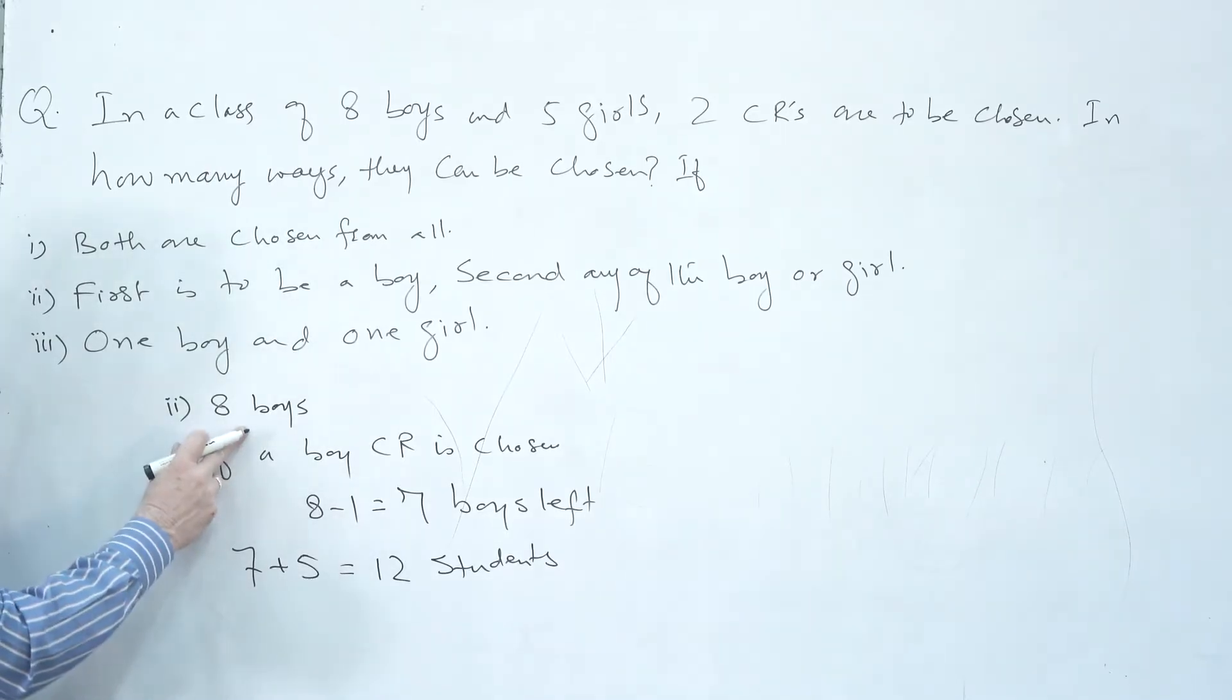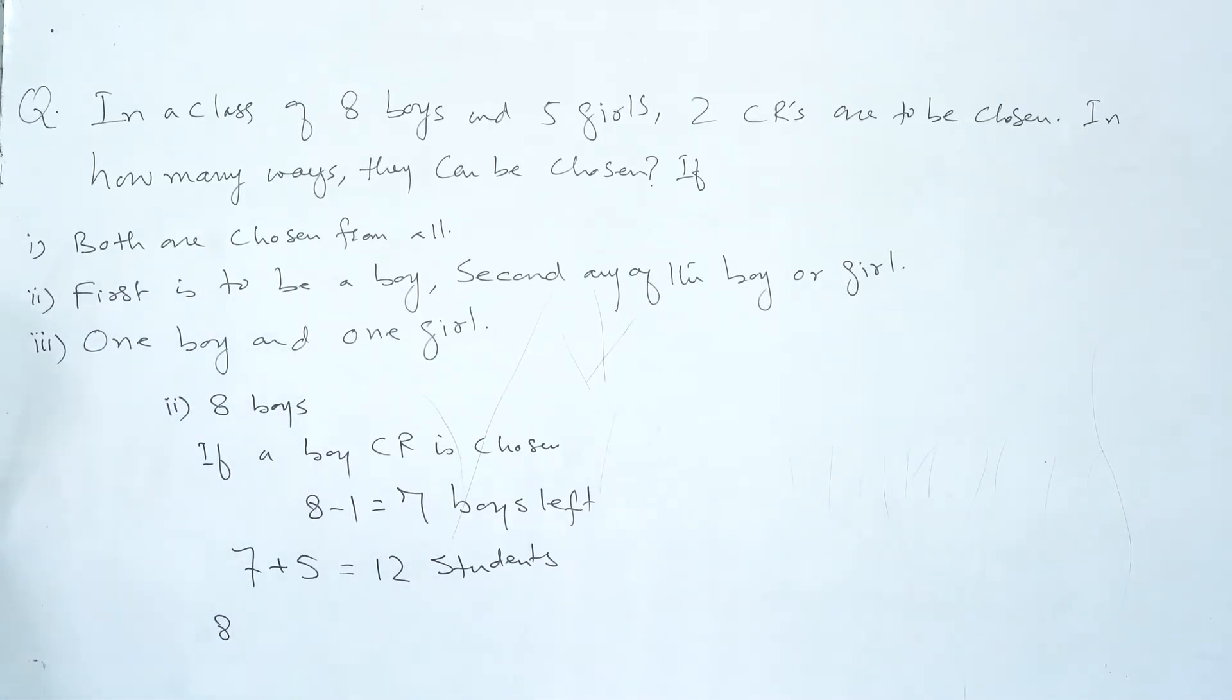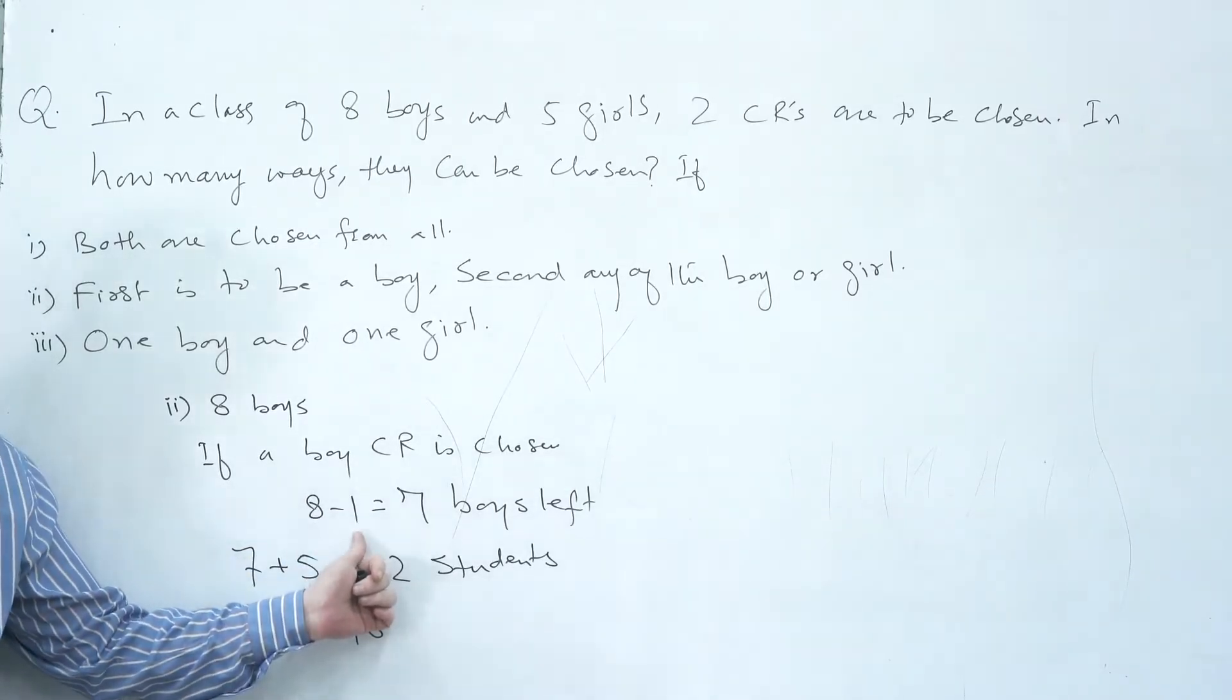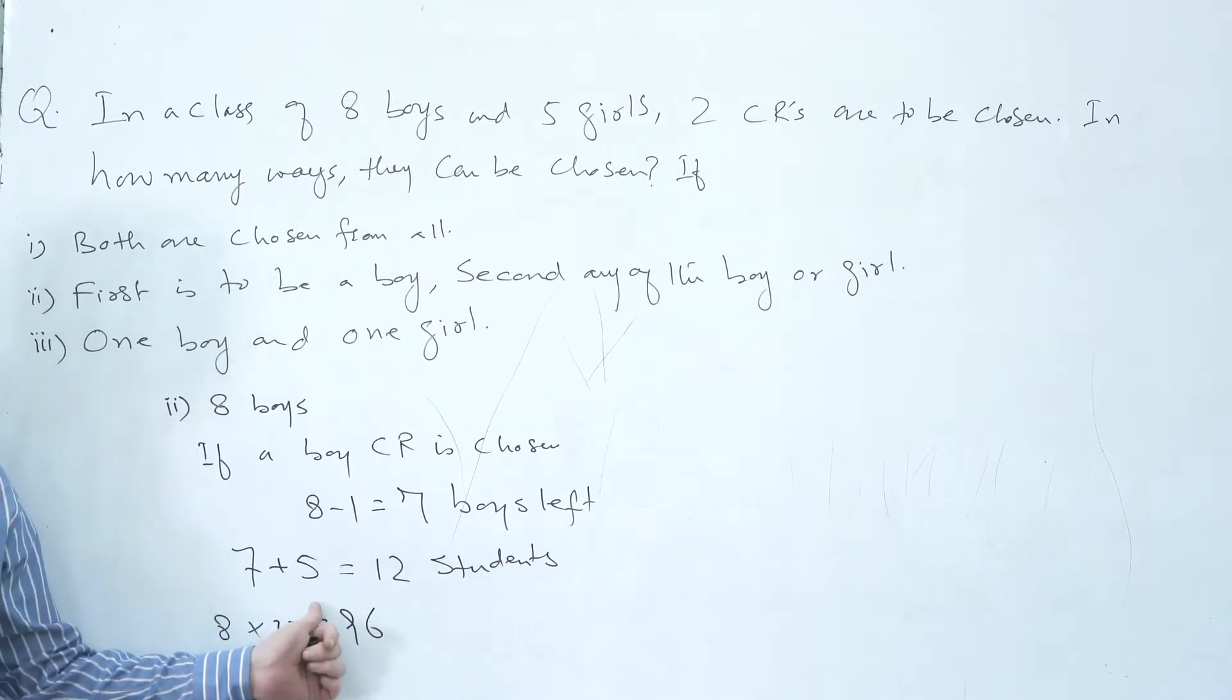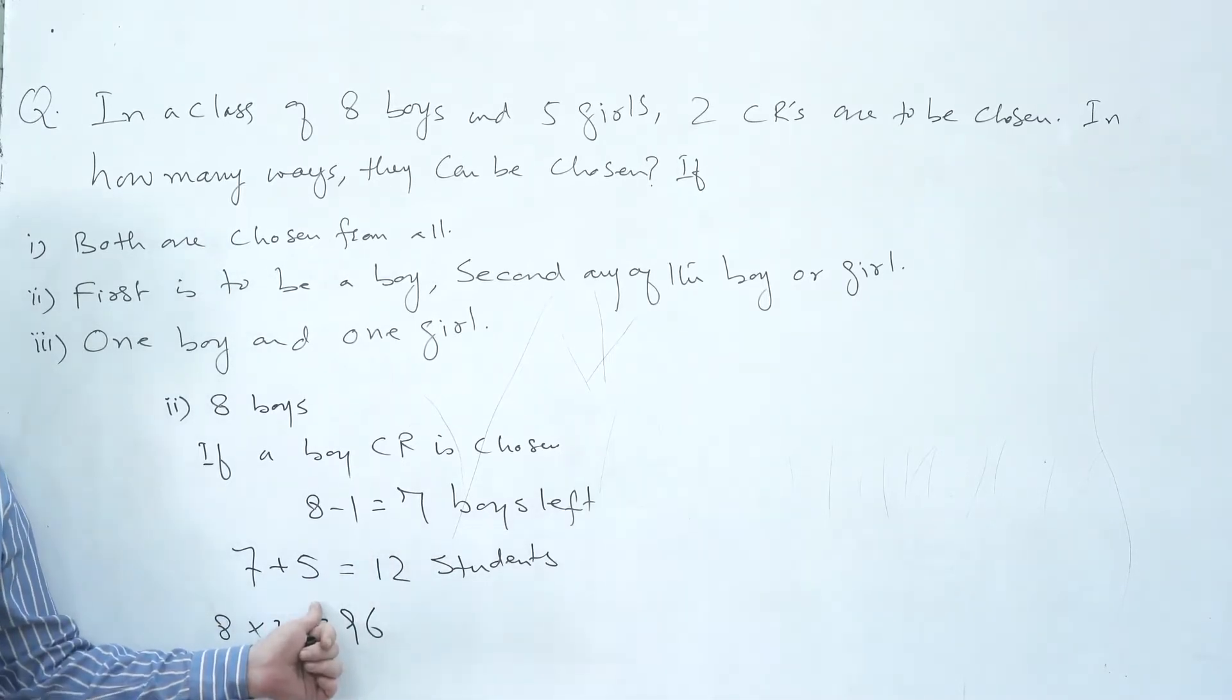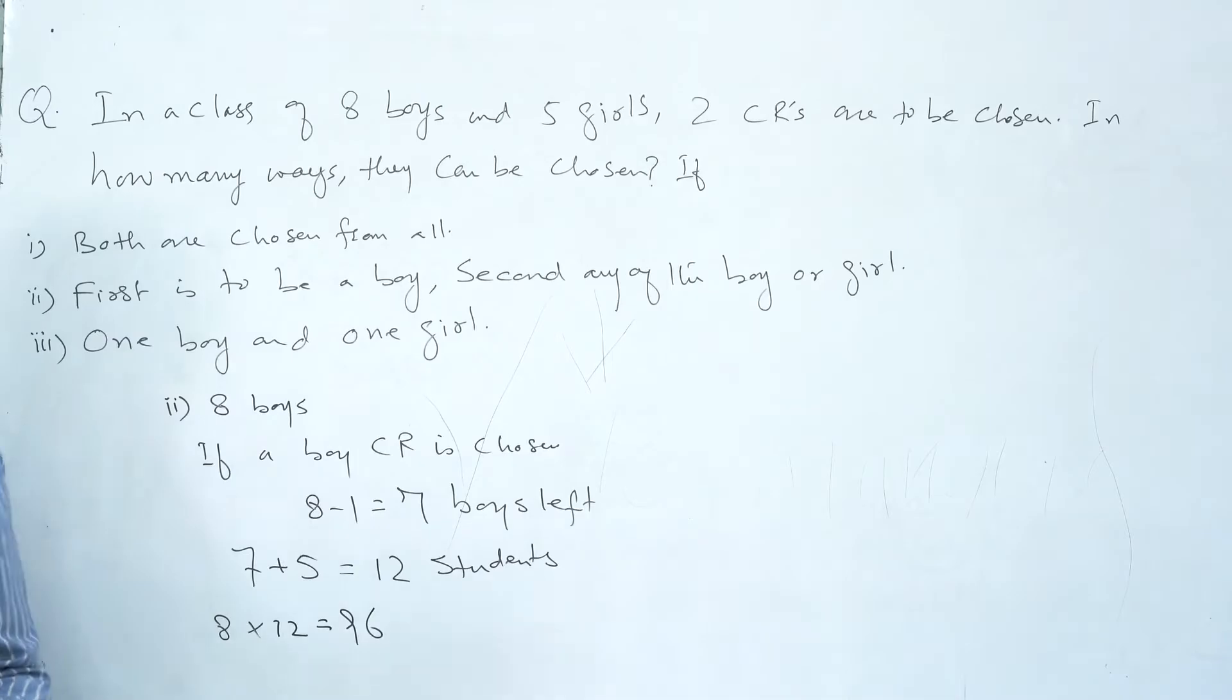Out of eight boys, a CR can be chosen in eight different ways. If a boy CR is chosen, eight minus one equals seven boys left. Now we have five girls, that means we have now twelve students. Out of twelve, the second CR can be chosen in twelve different ways. So total number of ways are 96. That is straightforward.